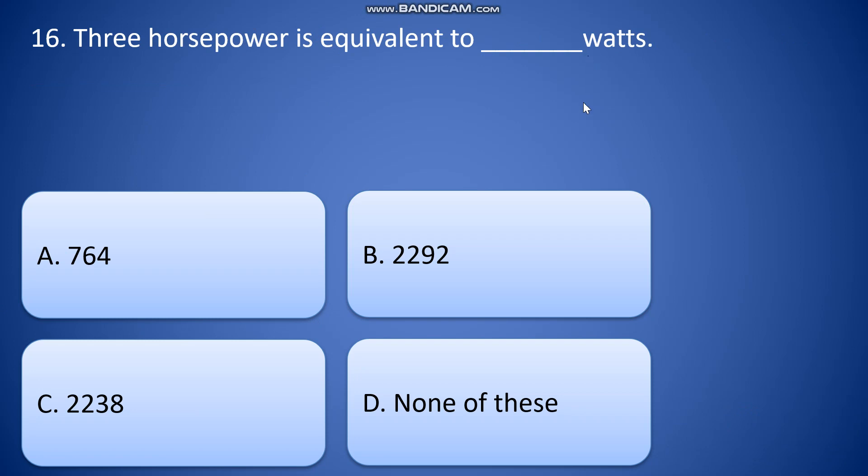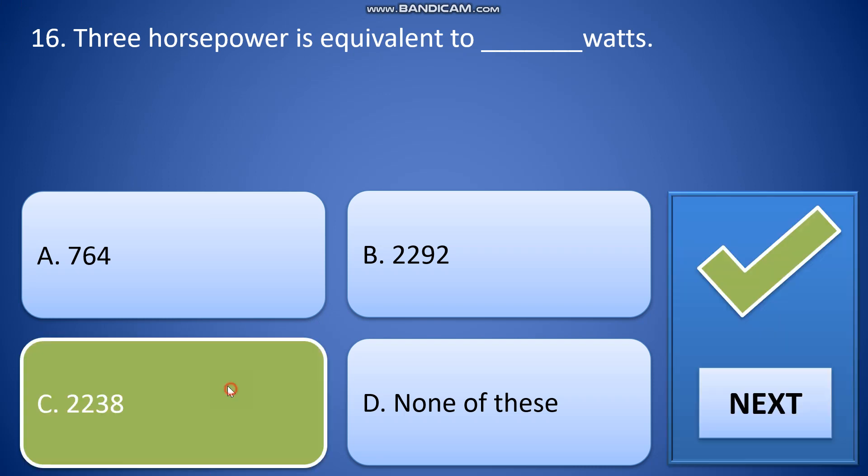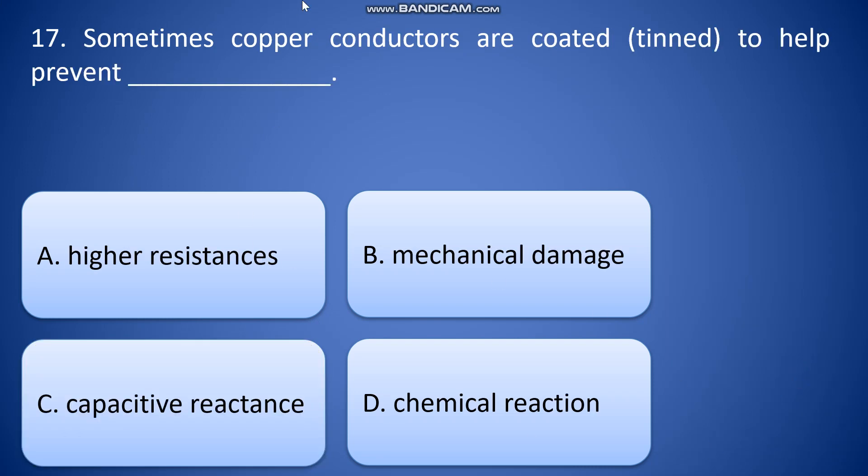Three horsepower is equivalent to blank watts. So, one horsepower is equals to 746 watts. 746 times three is 2238. The answer is 2238.